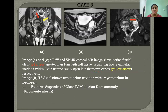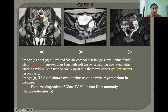Case 3: Image A is T2 weighted and image C is a coronal MR image showing a uterine fundal cleft greater than 1 cm with soft tissue separating two symmetrical uterine cavities. Both uterine cavities open into their own cervix respectively. Image B is T2 axial, showing two uterine cavities with myometrium in between. These features are suggestive of class 4 Mullerian duct anomaly.